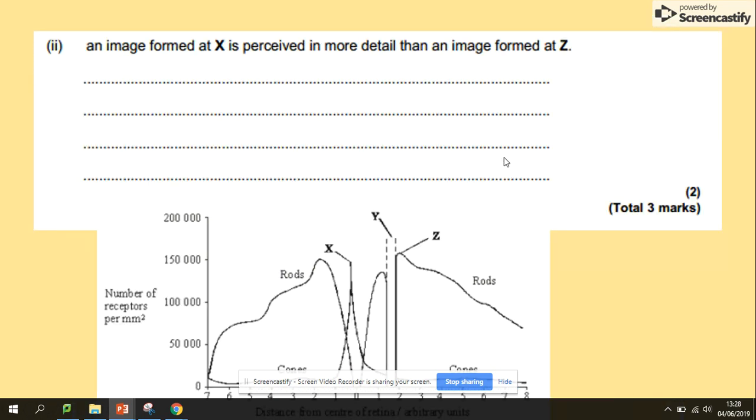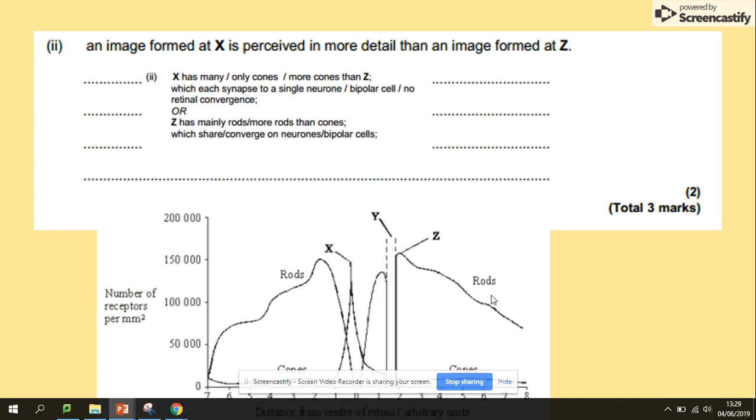And the final one: the image formed at X, which responds to cone cells, is seen in more detail than the one at Z rod cells. Now I'm thinking about the table of the differences, and we need to select some of those ideas. So X has only cone cells, more cone cells than Z, and each synapse to a single neuron, because we know that cone cells, one is attached to the other one, hence no retinal convergence.